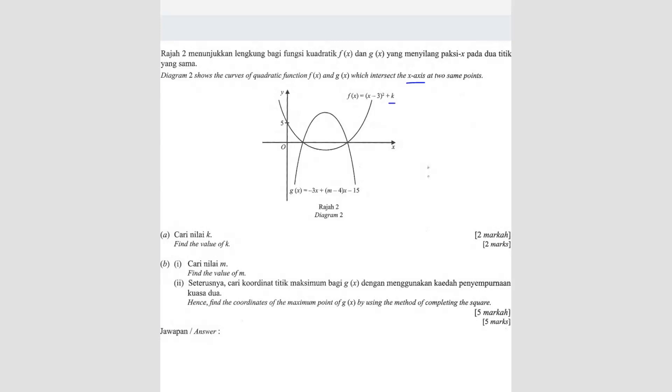So to find the value of k, we can use any coordinate on this graph. Since we have this coordinate (0, 5), we're going to use this. In question A, we substitute into the equation. So 5 equals (0-3)² + k. 5 equals 9 + k. So k equals 5 minus 9, which is -4.